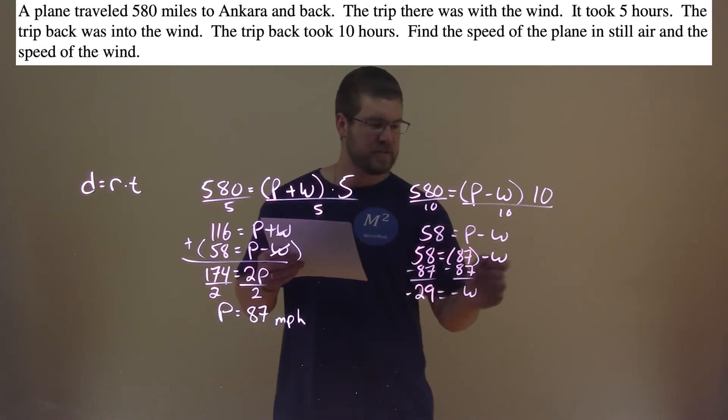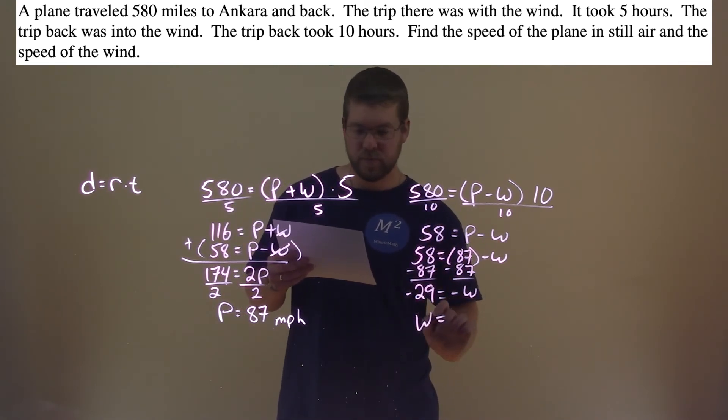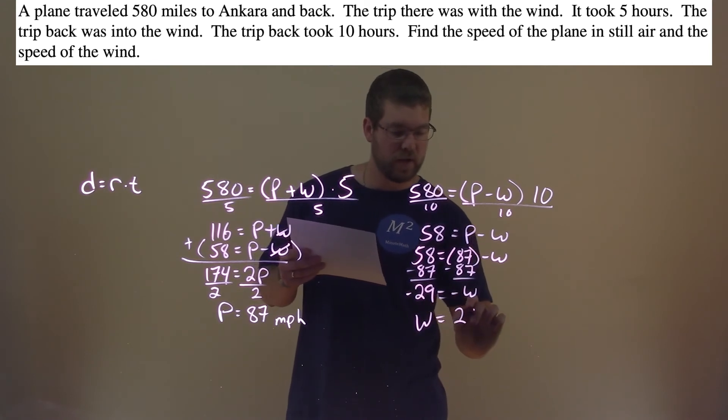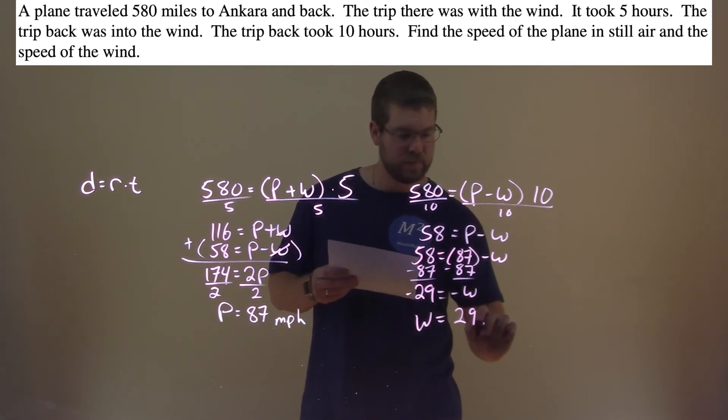Well, divide both sides by negative 1, cancels out. W, speed of the wind, is a positive 29, and that is miles per hour.